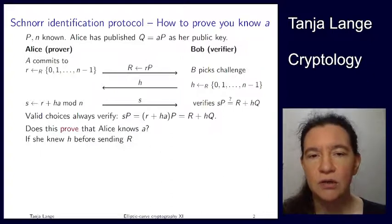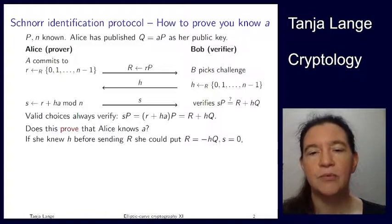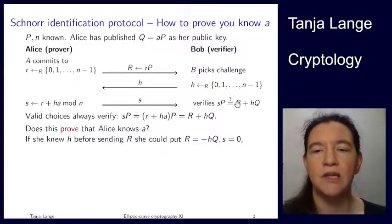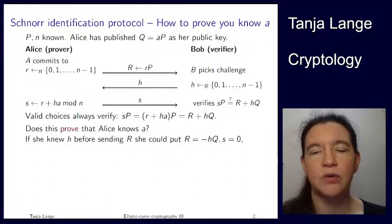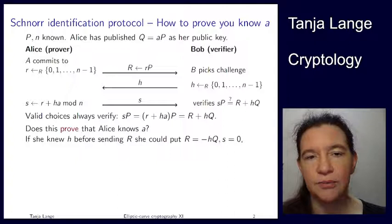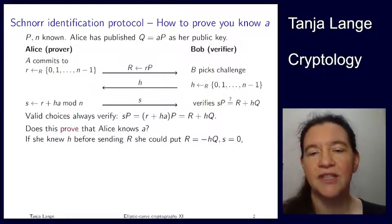Note that she need not know the discrete log of R to make this work. What she can do is put R equal to minus hQ. Over here on the right this would be the neutral element — so infinity on the Weierstrass curve, or (0,1) on the Edwards curve. That matches the scalar which she knows: zero times P gives this neutral element. So yes, this would be a valid identification transcript, sending minus hQ for R, and s equals zero.